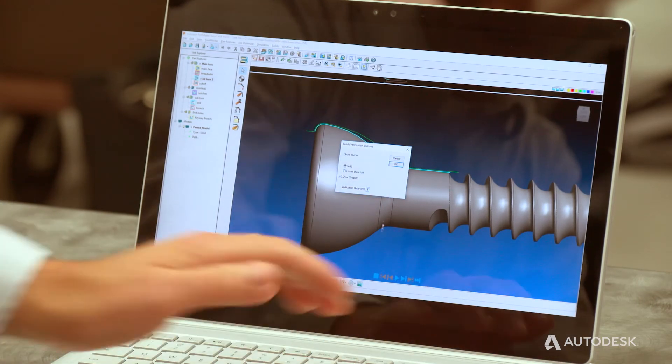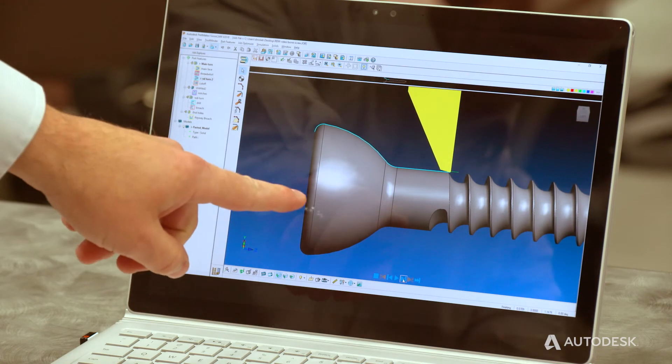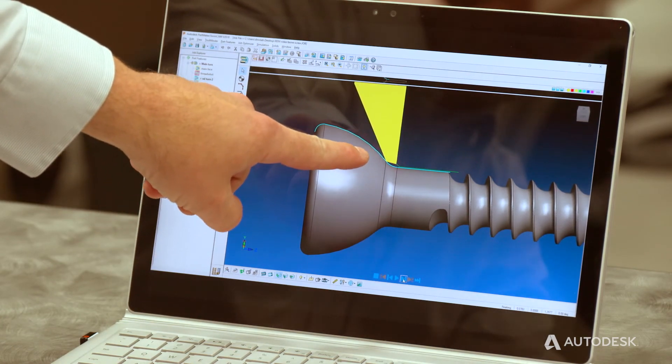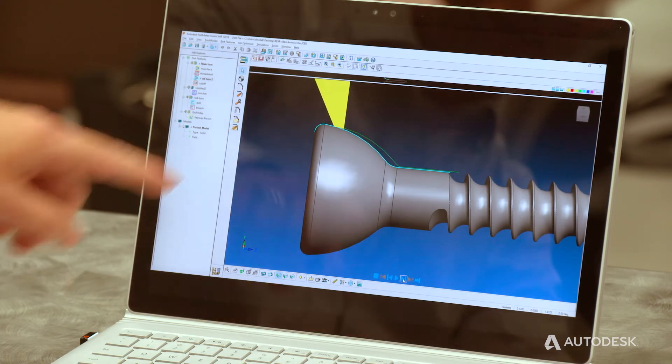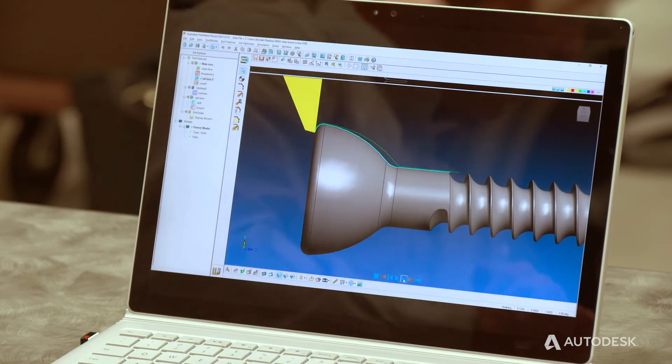What's nice about the software is we can choose our profile on the part. When we play this, we can easily compensate for both the front side and the back side of the tool. Here we can see the tool comes in and when it hits that tangent point, it's compensating for that radius, comes up over the back of the part and comes down the back side.